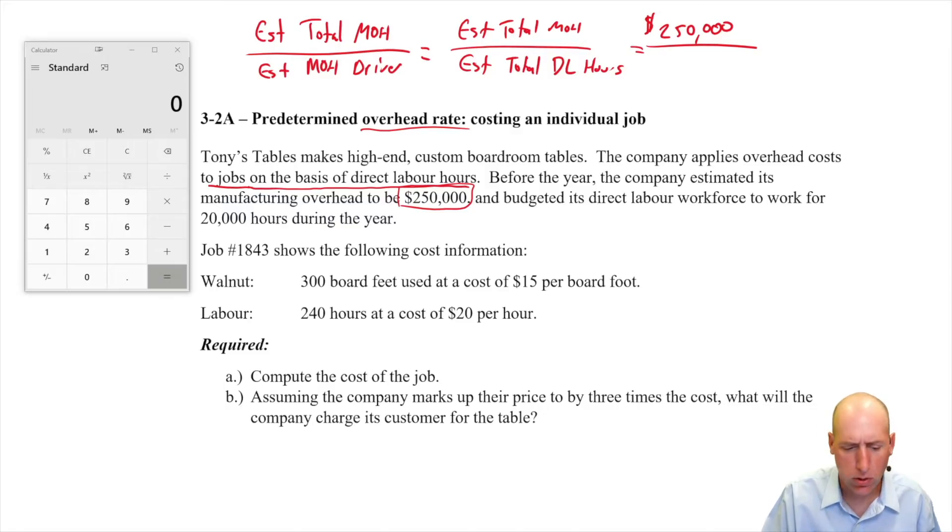And it budgeted its direct labor workforce to work for 20,000 hours. And that's not a complicated thing to do. Estimating overhead, you're estimating all of those indirect costs in your factory, whether that's depreciation, whether it's utilities, all those indirect factory costs. And then estimating your workforce hours, you just sort of say, how many direct labor workers work for this company and multiply the number of hours one is likely to work and you get a reasonable estimate. They've said 20,000 direct labor hours. So let's calculate that number.